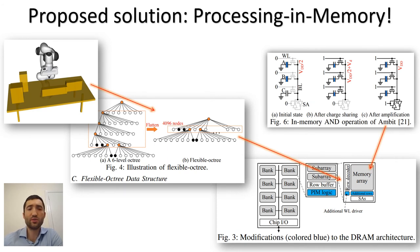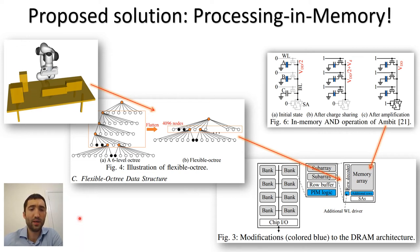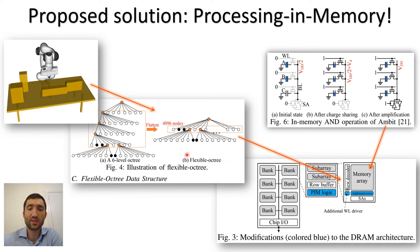Yuxin's solution is to implement this problem in memory — to use PIM. He looks at this gray robot colliding with the environment, with the shapes of a table. He represents this into a data structure called Octree and shows how it can be flattened by removing the internal nodes, thus increasing density.